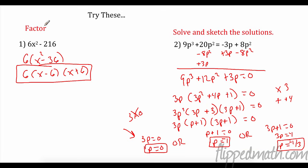For the practice problems: on the first one I took out a GCF of 6, leaving a difference of squares — √(x²) = x and √36 = 6, giving 6(x − 6)(x + 6). On the equation problem, I moved everything to the left side, took out a GCF of 3p, then factored to get 3p(p + 1)(3p + 1) = 0. Setting all three factors equal to zero gives p = 0, p = −1, or p = −1/3. Pause the video and try these on your own.